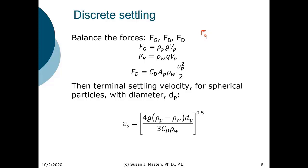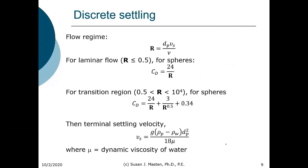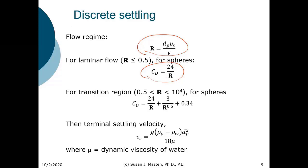When we have zero acceleration, we have the terminal settling velocity — it's the maximum settling velocity. If we have a spherical particle with diameter d, we can state the terminal settling velocity in a general form. What we typically want is a laminar flow regime. If we have laminar flow, we can use the Reynolds number to describe the flow regime. For laminar flow, the coefficient of drag can be approximated as 24 divided by the Reynolds number for a spherical particle.